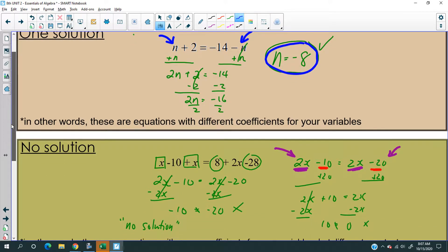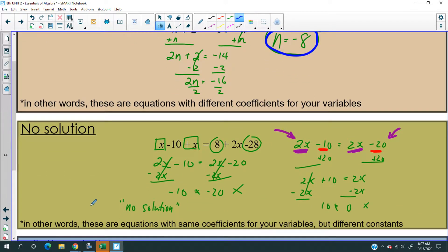So this one is positive n, that one's negative n, and hence, we got a one-solution sort of equation. In the second case, we have the same coefficients with the variables, but different constants. That's a no solution.